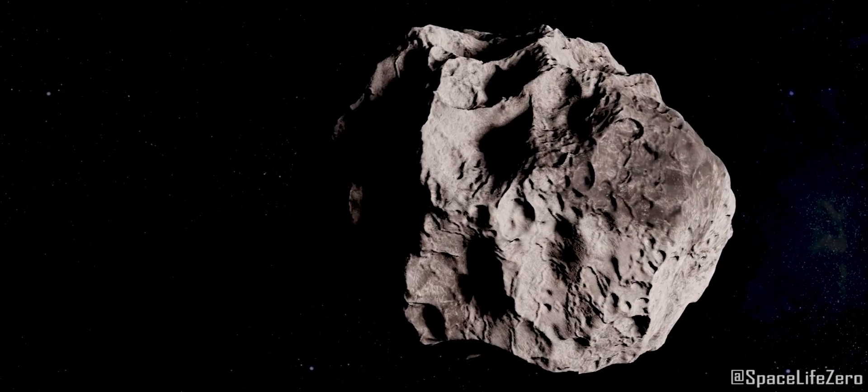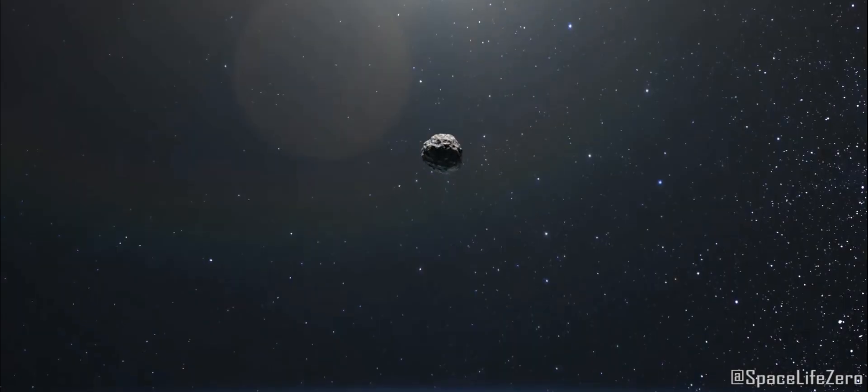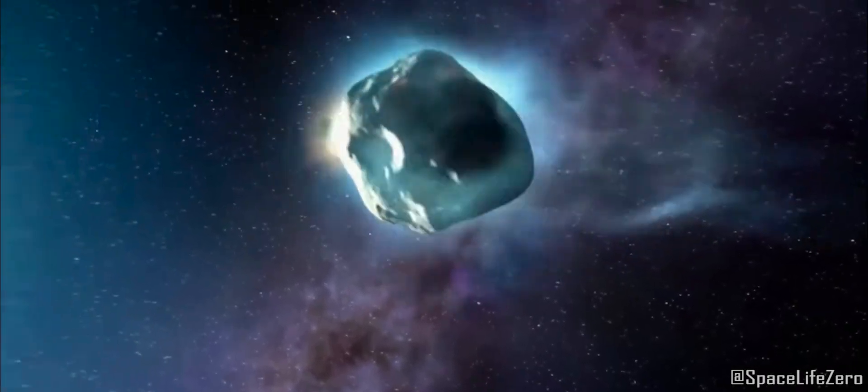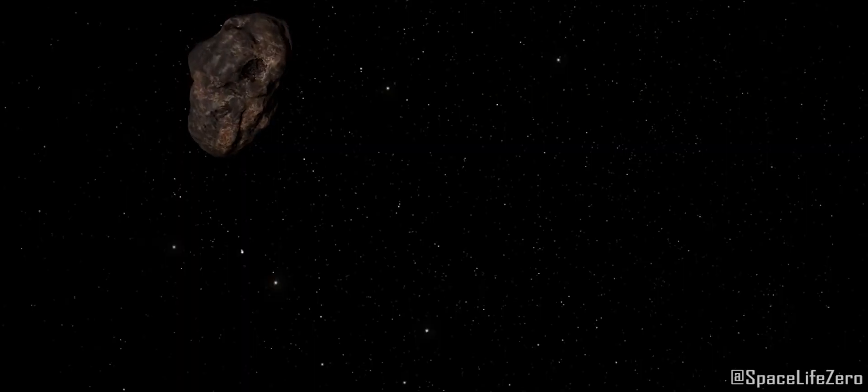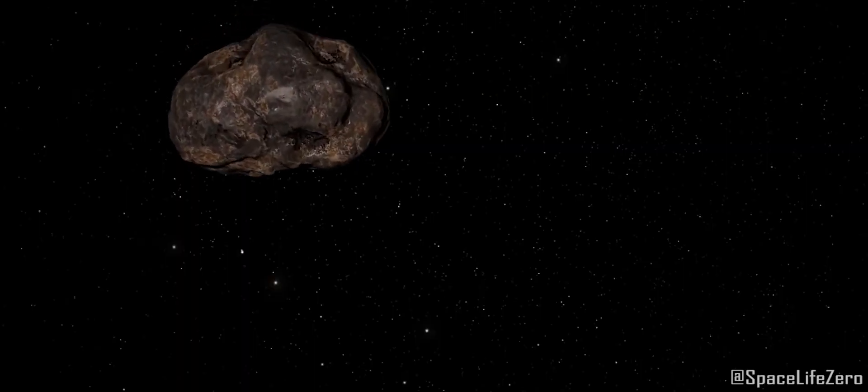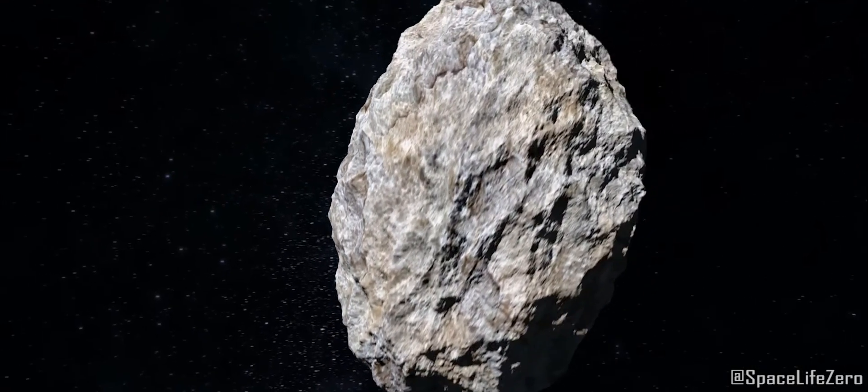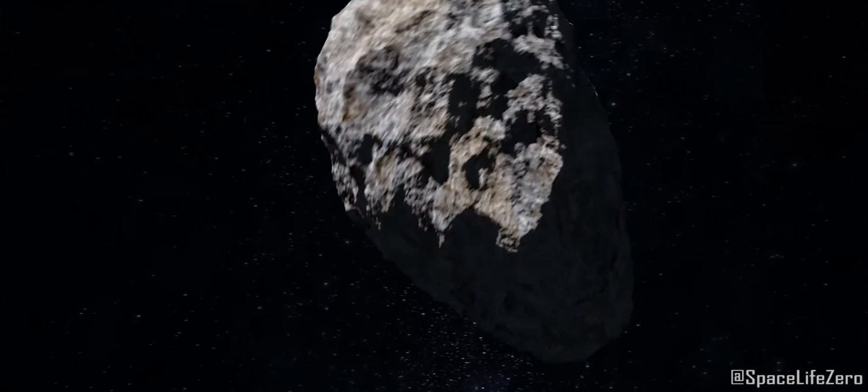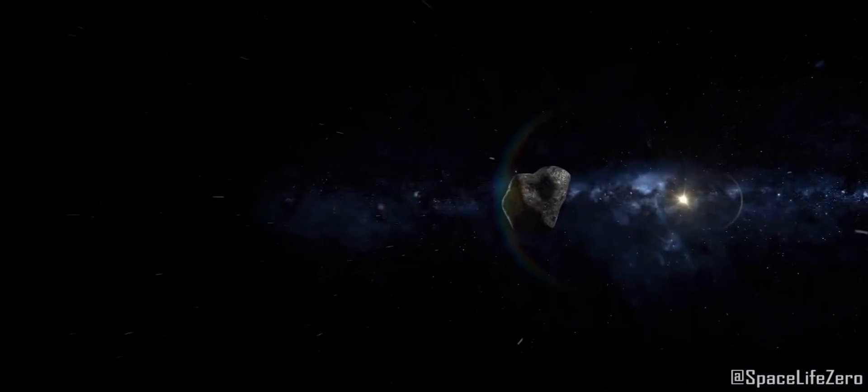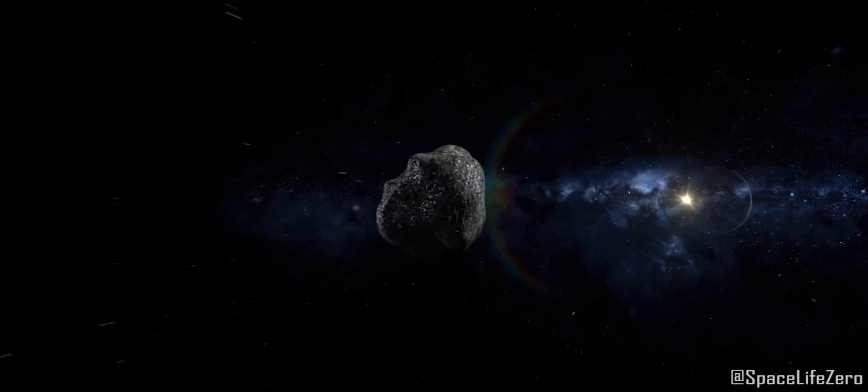Asteroid 2020 QG3 was first discovered on February 27, 2012, and it belongs to the Apollo group. This space rock has been categorized as a potentially hazardous near-Earth object, having a diameter estimated in the range from 145 to 324 meters. It makes one orbit around the Sun in 1,104 days.